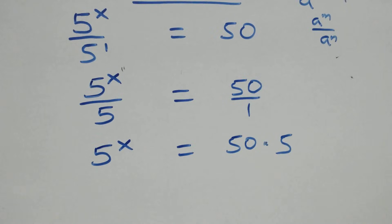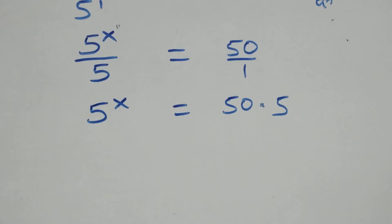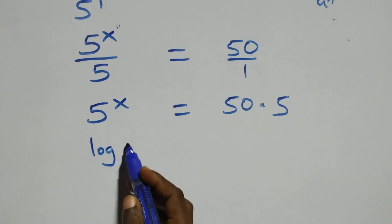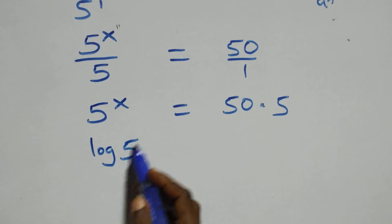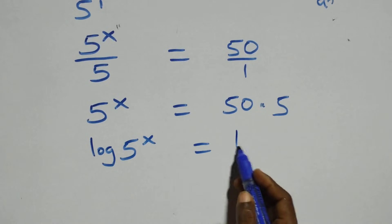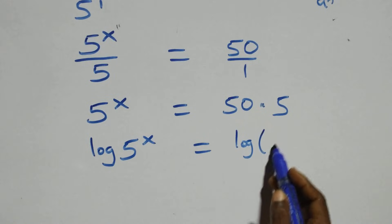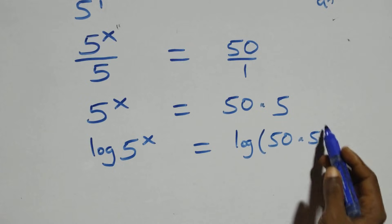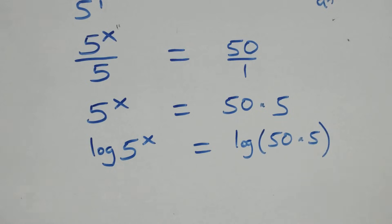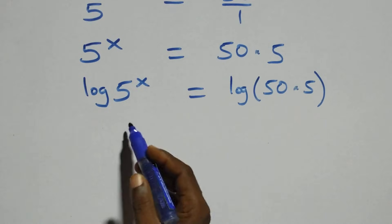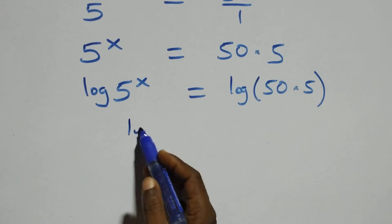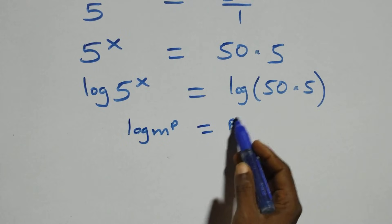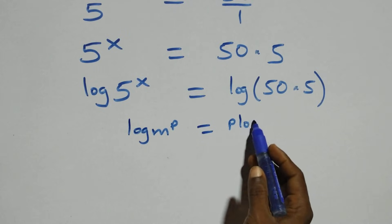The next step is to take the log on both sides. We have log of 5 raised to power x equals log of (50 times 5). We apply the power rule of logarithms: log of n raised to power p equals p times log n.